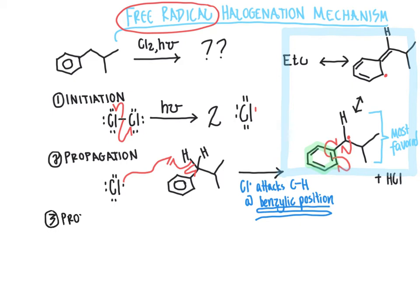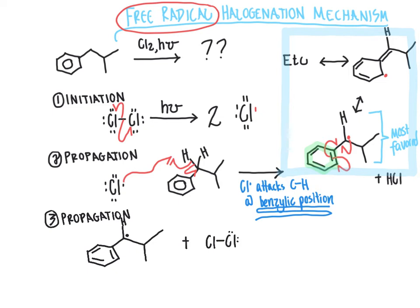Step three is another propagation step. We take the most favorable resonance-stabilized intermediate from the last step and redraw it. Now that we have that carbon radical — which is highly reactive — it searches the reaction flask for whatever it can react with. Statistically, with the container full of chlorine and alkylbenzene, it is most likely to come into contact with another molecule of Cl2. The bond between the two chlorine atoms is very weak and subject to reaction with the carbon radical.